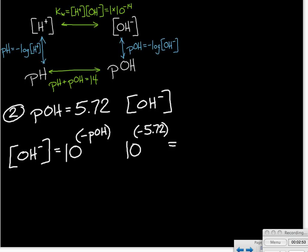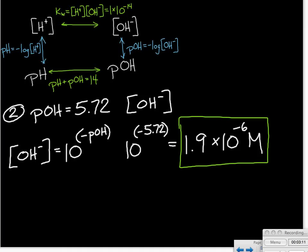So we substitute in, we've got our pOH value of 5.72. We change the sign, take 10 raised to that power, and we get the concentration of the hydroxide ion is 1.9 times 10 to the minus 6th molar. Again, our pOH had two decimal places, so our final answer should have two significant figures.